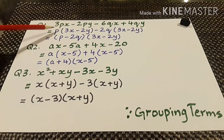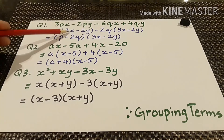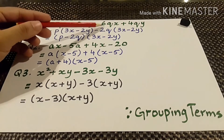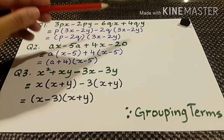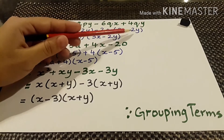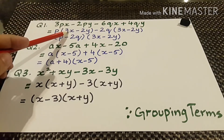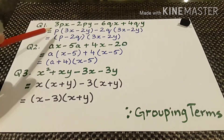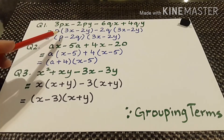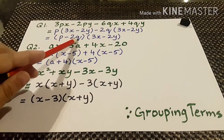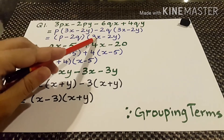From the first group we take p as common, so we get 3x minus 2y. From the second group we take minus q as common and inside we get 3x minus 2y. You can see that these two terms are common, so we can make factors as p minus q and 3x minus 2y.